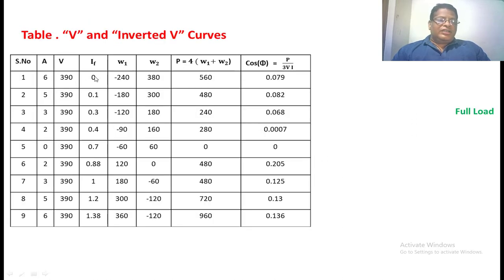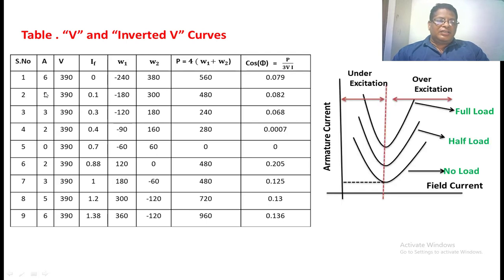This is the table with the values we obtained in the laboratory. The readings include the ammeter reading, voltmeter reading, field current, wattmeter 1 reading, and wattmeter 2 reading. The sum of the two wattmeter readings gives the total power. We have taken a multiplication factor of 4. The power factor cos φ equals the total power divided by √3 × VL × IL. From this we get different values of armature current and field current for each reading.